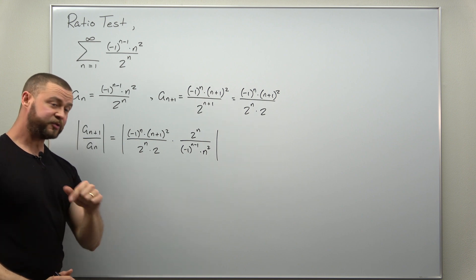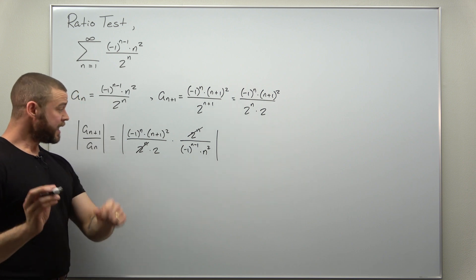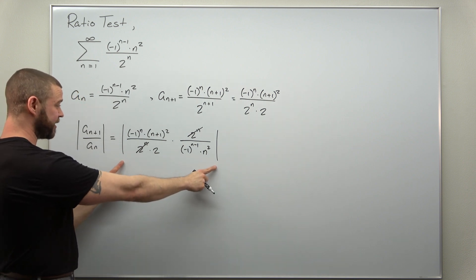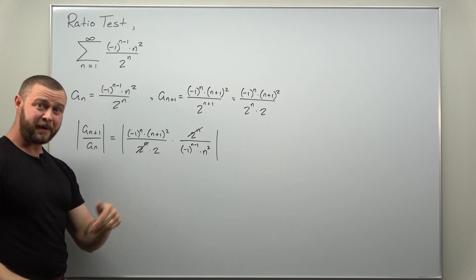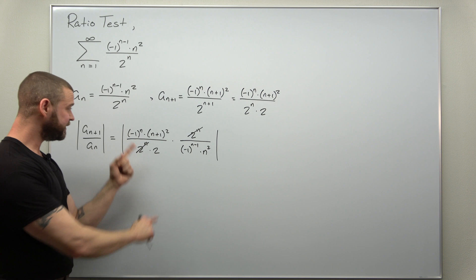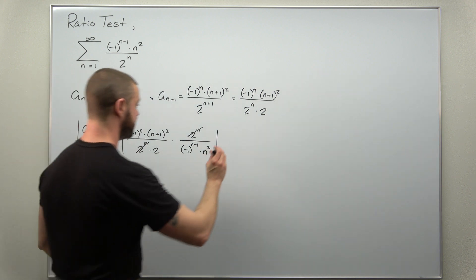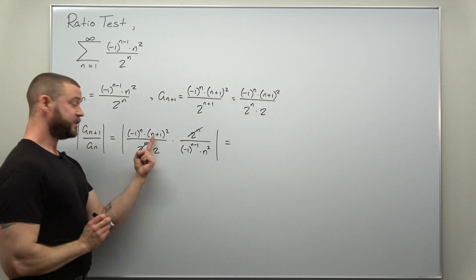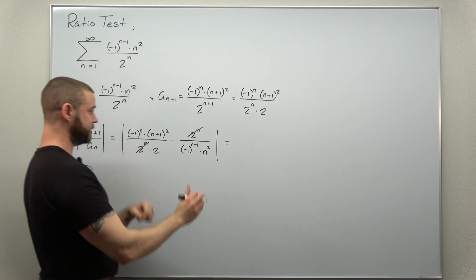All right, now you should find some terms cancel out. We can cancel out the two to the n factors and with the absolute value here, the negative one to the n's and negative one to the n minus one, take the absolute value of a negative, it just becomes positive. So we can just completely forget about those alternating terms.